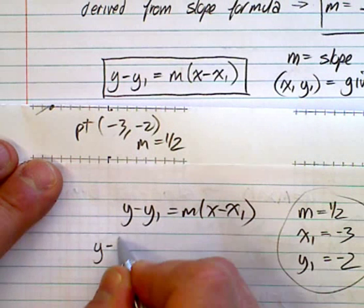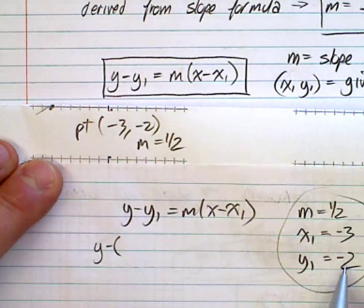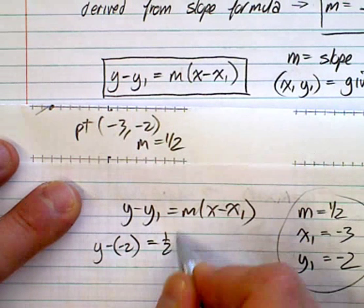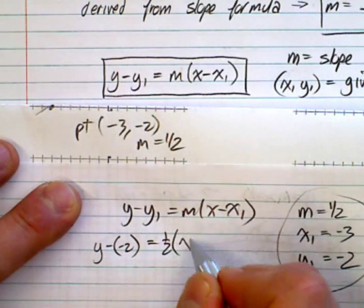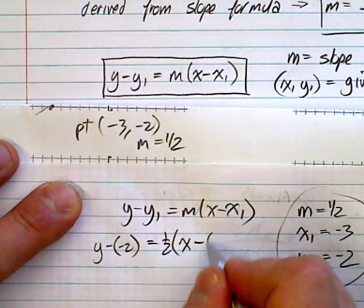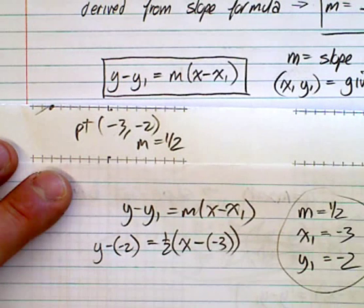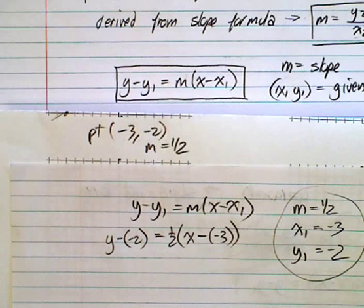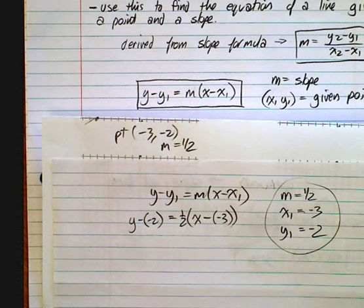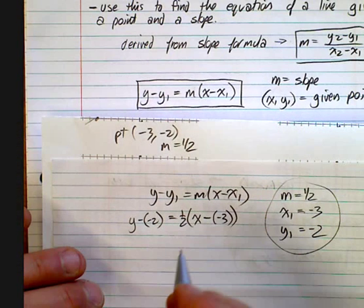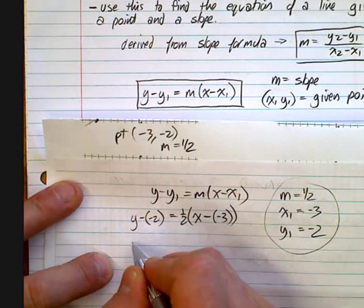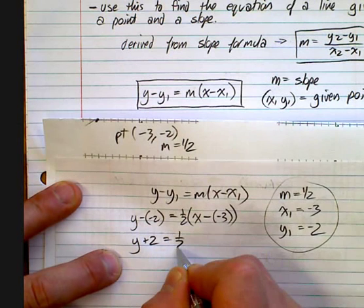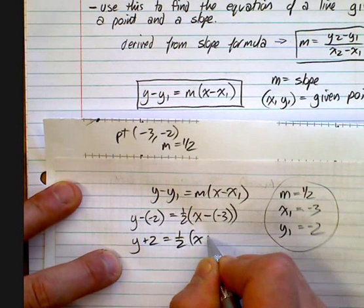So y minus negative 2 equals m, which is one half, times x minus the x value, which is minus 3. You're off to the races. What you need to see now is that you need to simplify it a little bit. So y plus 2 is equal to one half times x plus 3.